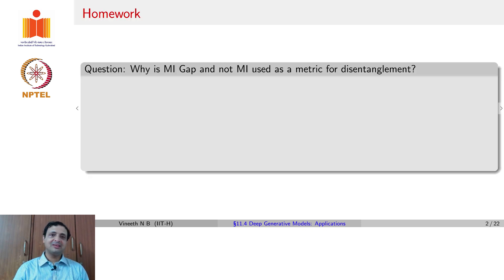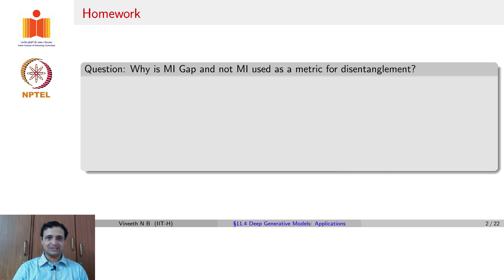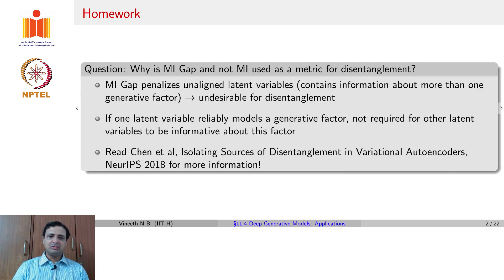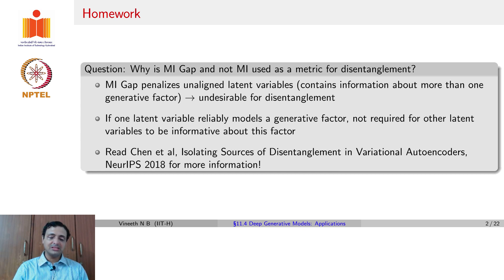Before we go there, the question that we left behind from the last lecture was: why is the mutual information gap used and not just the mutual information in the metric that we discussed for disentanglement? Hope you had a chance to try finding this out. The mutual information gap tries to penalize unaligned latent variables, because we are looking at the gap between the two latent variables which have the highest mutual information with a generative factor.